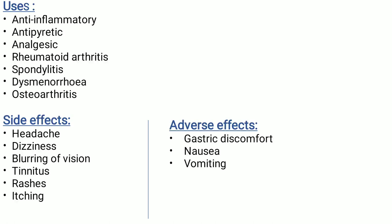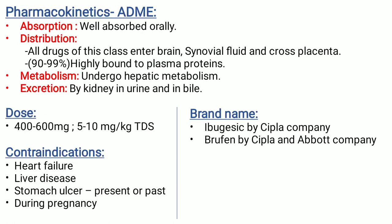Uses of ibuprofen: anti-inflammatory, antipyretic, analgesic, rheumatoid arthritis, spondylitis, dysmenorrhea, osteoarthritis. Side effects: headache, dizziness, blurring of vision, tinnitus, rashes, itching. Adverse effects: gastric discomfort, nausea, and vomiting. Pharmacokinetics: absorbed orally. Distribution — all drugs of this class enter the brain, cerebrospinal fluid, and cross the placenta. 90–99% are highly bound to plasma proteins. Metabolism: undergoes hepatic metabolism. Excretion: excreted by kidney in urine and bile.